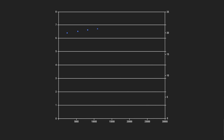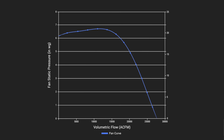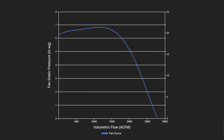Each fan has a unique curve showing a spectrum of potential operating points called a fan curve. Each potential operating point shows the amount of airflow and pressure a fan generates at that point. Changing the fan speed shifts the fan curve either up with a speed increase or down with a speed decrease.